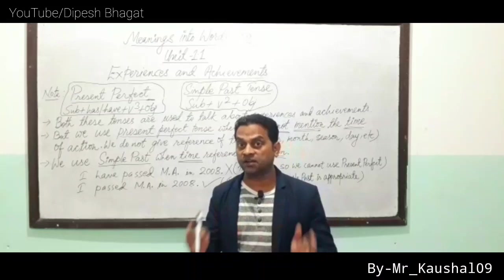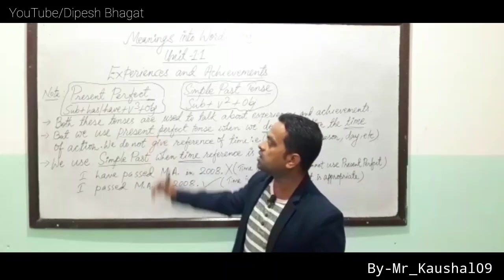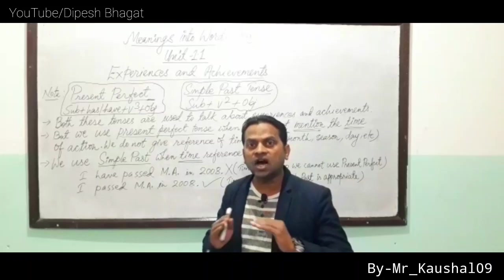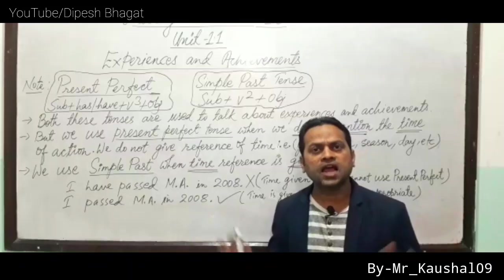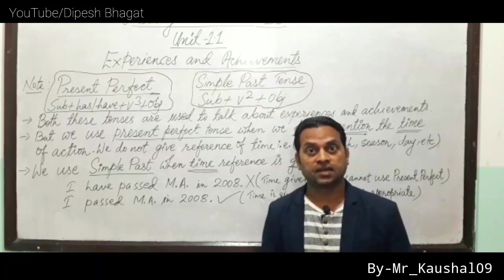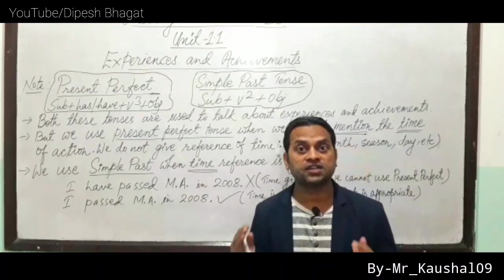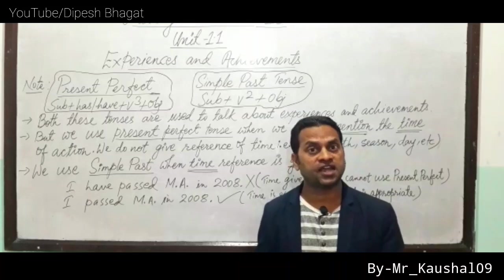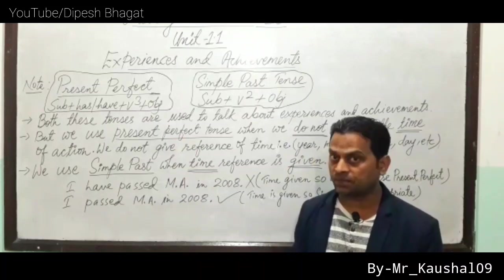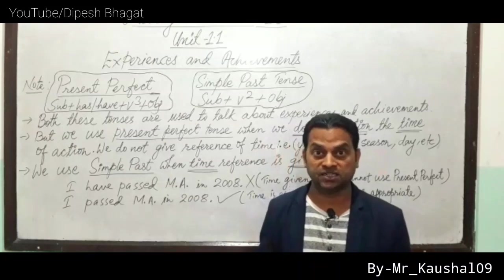However, there is a difference in when we use each tense. When we use Present Perfect, we cannot mention the time. For example, we cannot say 'I have passed MA in 2008' because a time is mentioned. If we mention time, we must use Simple Past: 'I passed MA in 2008'. When we mention time, we use Simple Past; when we don't mention time, we use Present Perfect.